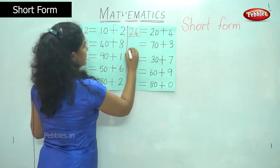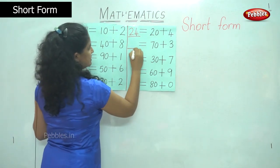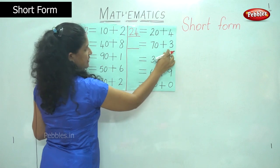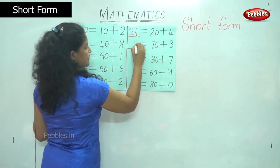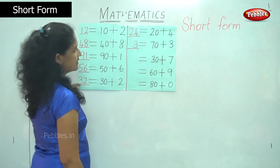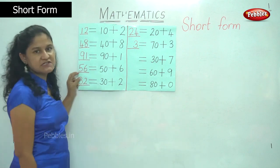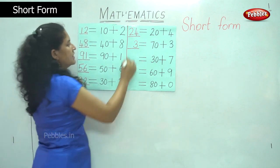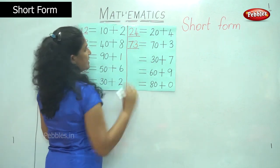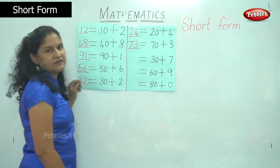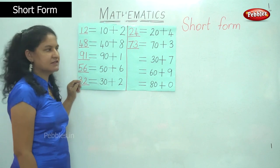The next number is 70 plus 3. So in the ones place I have number 3, and in the tens place I have 7 tens or 70, that gives me the number 7. So my answer is 73.